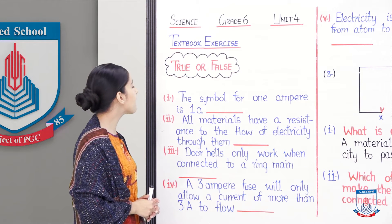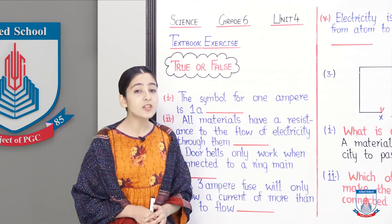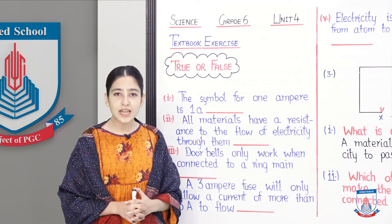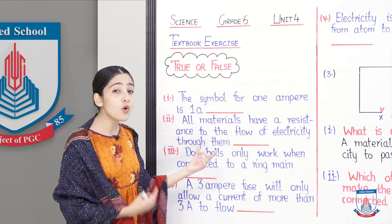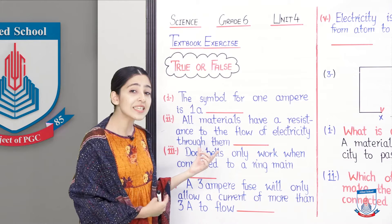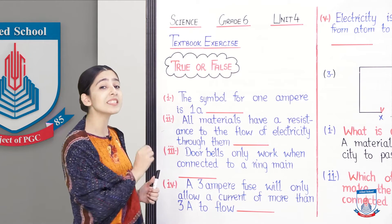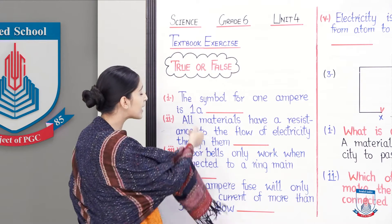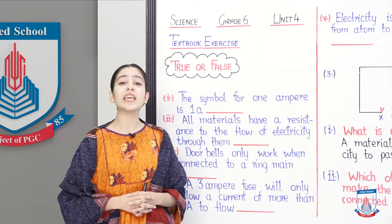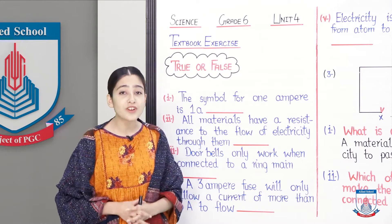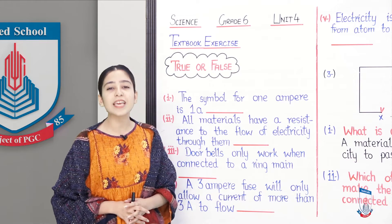The symbol for one ampere is 1A. Aapko pata hai ki ampere is the unit of current. One ampere ko denote kiya jata hai with one A. Yahaan peh one A se represent kiya jata hai, magar ye statement hogi galat. Woh isi liye kyunke one A nahi, balke yaha hona chahiye tha capital A. Capital A se represent kiya jata hai ampere, which is the unit of current. Iska matlab statement number one humari hogi galat. Aap iske answer mein mere saath likhenge false.